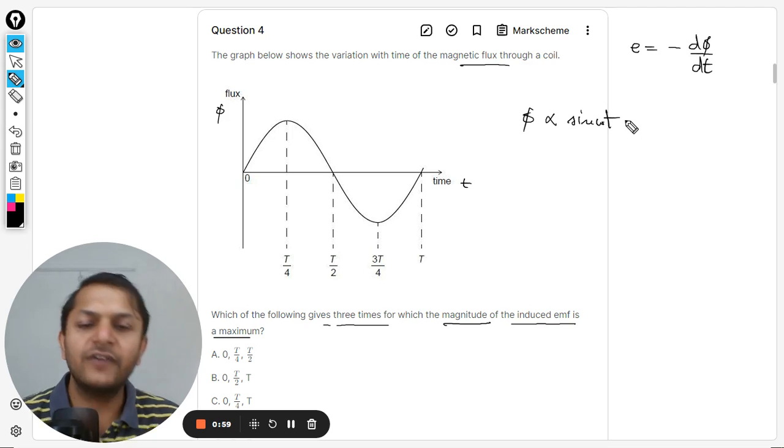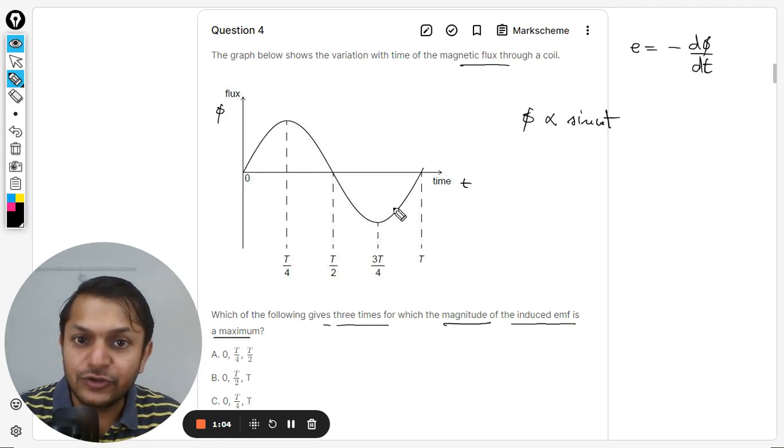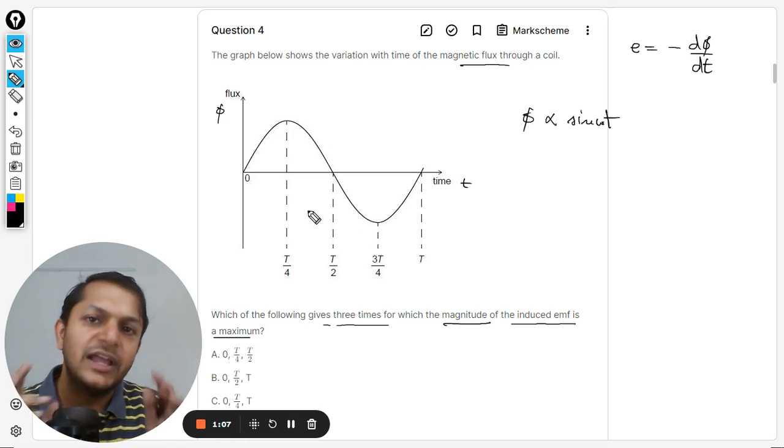So we can skip the negative sign also. Now clearly, this phi is shown as a variation of sine omega t. It's clear because this is a sinusoidal variation. So I'm going to tell you a couple of methods here. I will tell you two methods, but the first method is this.